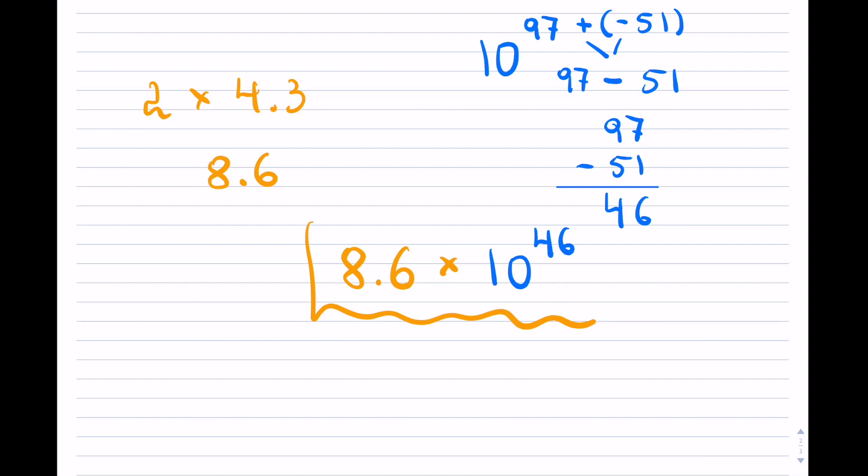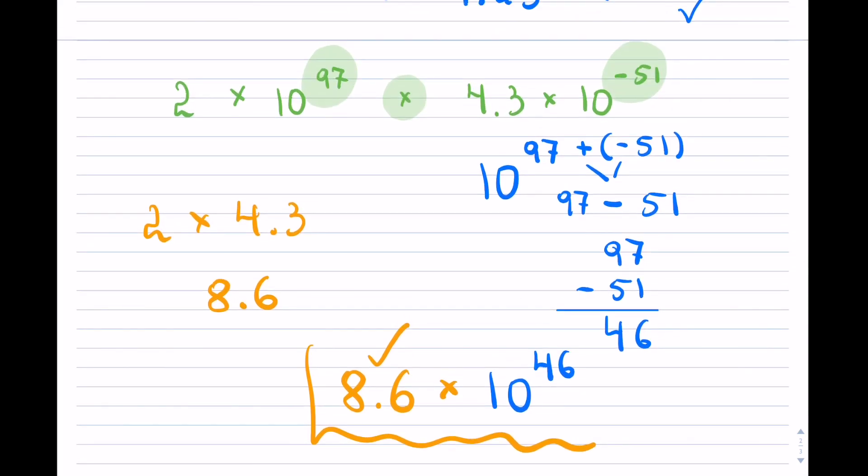I don't have to move the decimal anymore because it is between 1 and 10, the mantissa that is, so this is already in scientific notation. So just be careful when you are dealing with the exponents so that you are doing your addition correctly. Here we're actually adding a negative number, so it's like having $97 and then you're adding a debt, $51, which is going to reduce how much money you have. Okay, that's why we got 46.